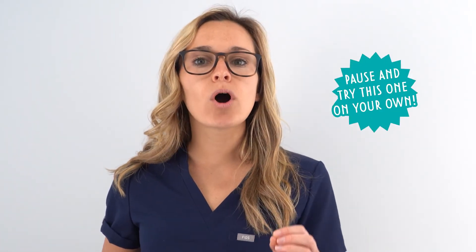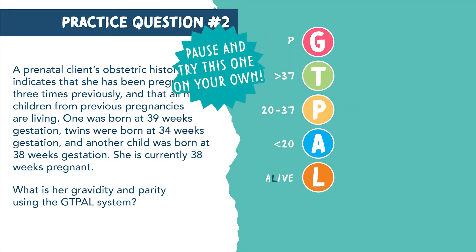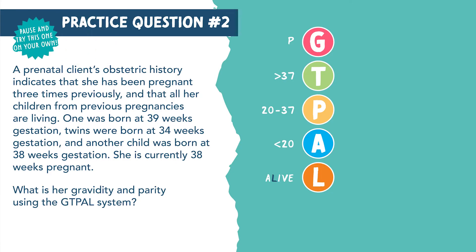Now for practice question number two. I would go ahead and pause and try this one on your own. A prenatal client's obstetric history indicates that she has been pregnant three times previously and that all her children from previous pregnancies are living. One was born at 39 weeks gestation. Twins were born at 34 weeks gestation. And another child was born at 38 weeks gestation. She is currently 38 weeks pregnant. What is her gravidity and parity using the GTPAL system?